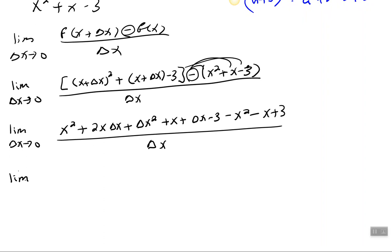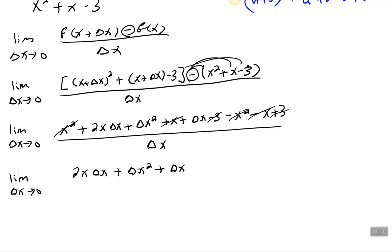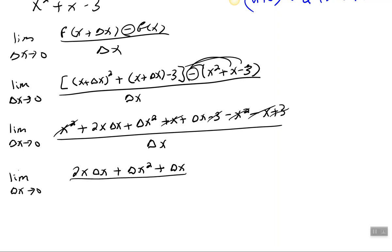Now let's simplify. The x squared cancels with the negative x squared. The x of the first cancels with the negative x, and negative 3 cancels with positive 3. So we have 2x times delta x plus delta x squared plus delta x, all over delta x.